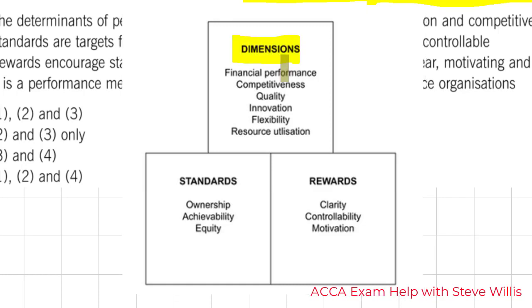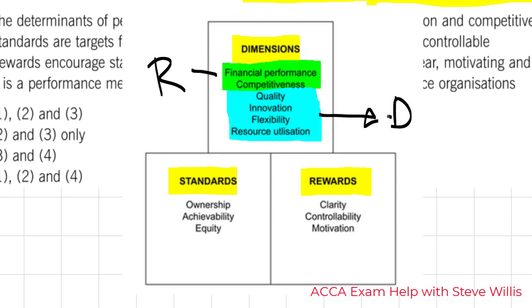We have three areas of performance management to look at. Dimensions. These are the broad areas of performance that should be measured. The first two, financial and competitive, those are called the results. That's what we get. We have to measure financial, we have to measure market share. How competitive are we? The model then looks at the drivers or the determinants of success. These are quality, innovation, flexibility, and resource utilization. Determinants or drivers. That's what gives me results.